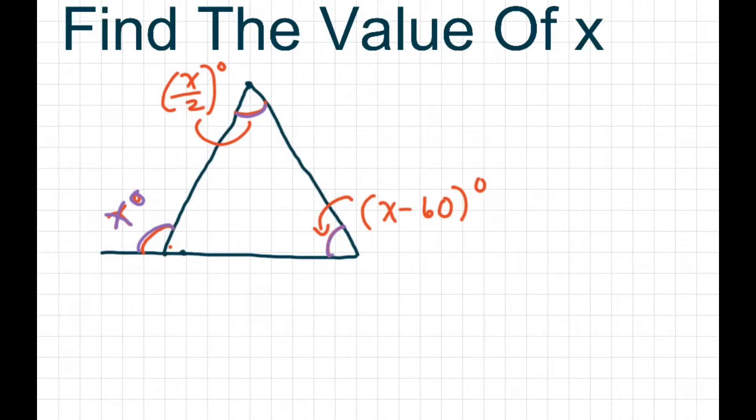So that's how we're going to set it up. We're just going to say x here equals the sum of our remote interior angles which is x over 2 plus x minus 60 and I'll just go ahead and take away the parentheses here to save room.